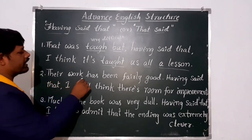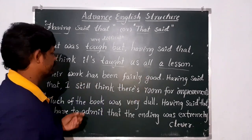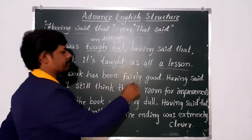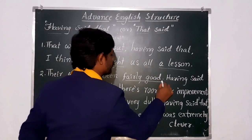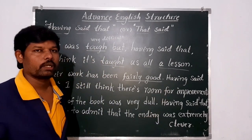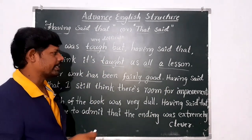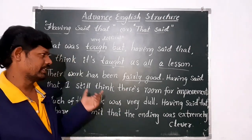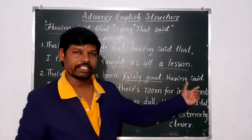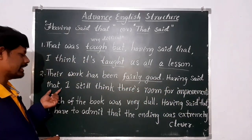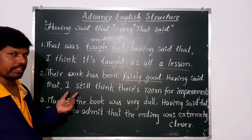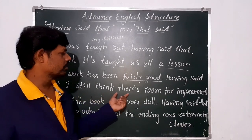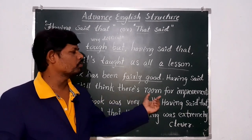Next one. First sentence: 'Their work has been fairly good.' If you observe, 'their work has been fairly good' — that means we are giving positive comments; we are saying they are very good. Having said that — 'Having said that, I still think there is room for improvement.'